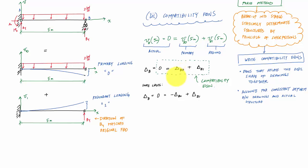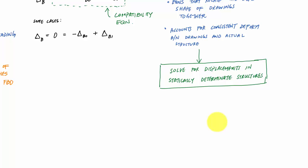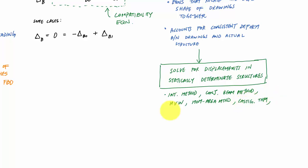Now that I have the compatibility equation, each term — delta_B0 and delta_B1 — is its own deflection calculation problem for a statically determinate cantilever beam. You can solve for these displacements using whatever method you're most comfortable with: the integration method, the conjugate beam method, the method of virtual work, moment area methods, Castigliano's theorem, or even the appendix tables in your textbook, which contain charts and equations for common loading cases.